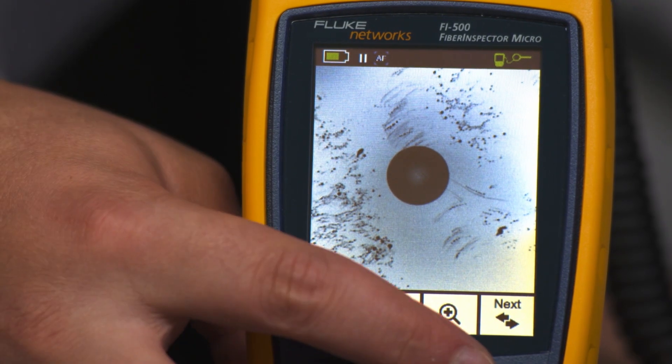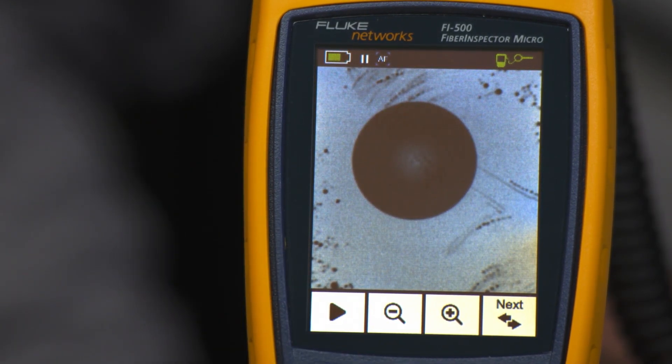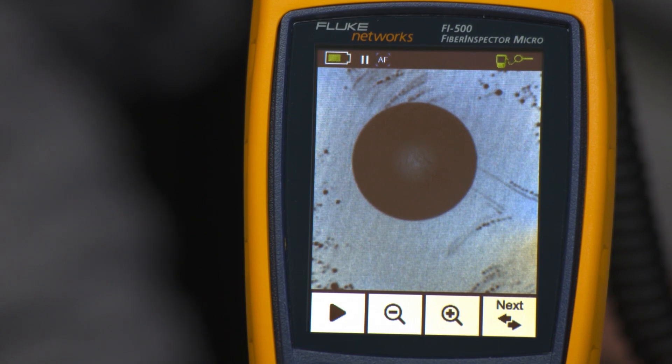The zoom function increases the magnification to make it easy to spot contamination. You can clearly see contamination on this fiber end face.